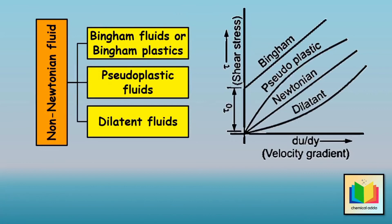The next type is dilatant fluid. The viscosity of dilatant fluids increases with an increase in velocity gradient, and dilatant fluids are said to be shear-thickening. From the graph, the curve for dilatant fluid passes through the origin, is concave upward at lower shear, and becomes nearly linear at high shear. Examples are suspensions of starch in water, pulp in water, and sand-filled emulsions.